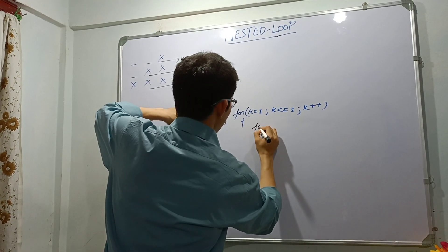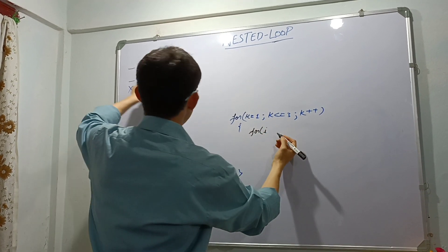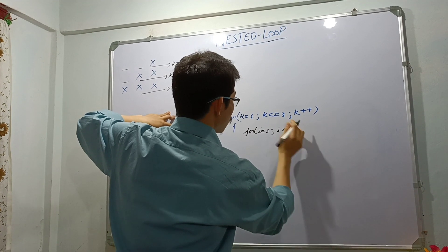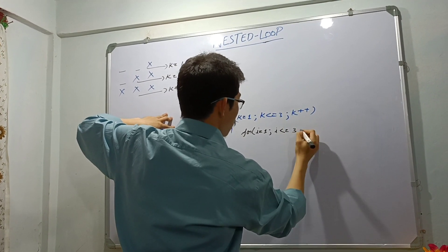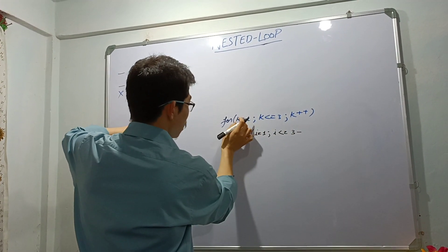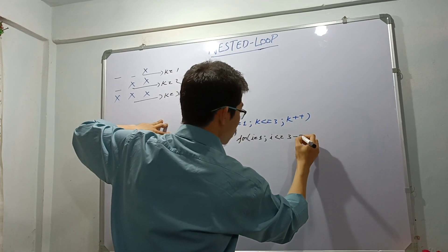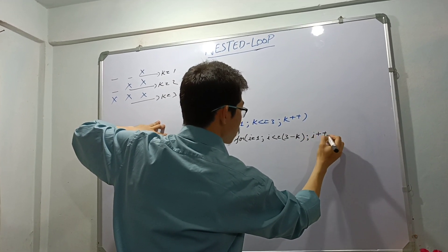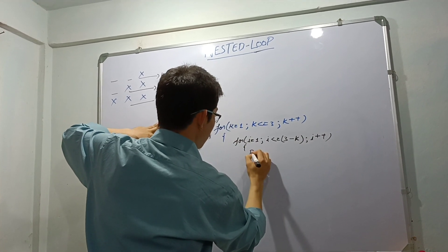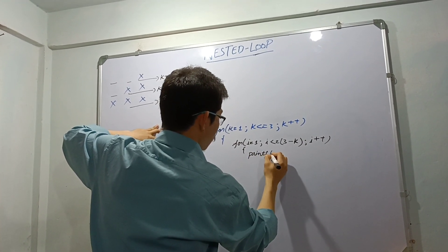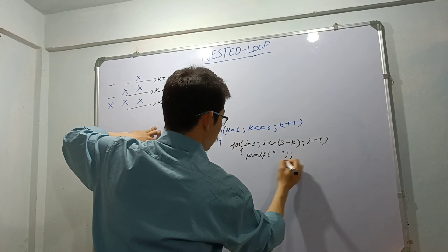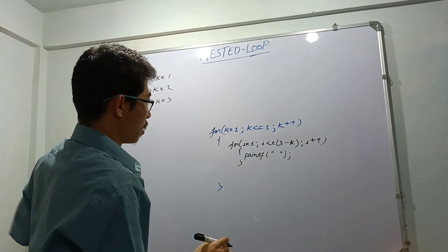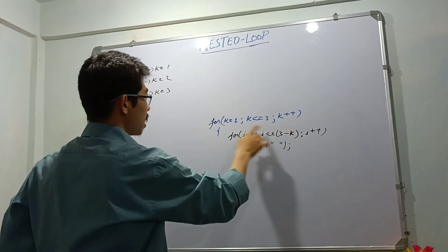For the gaps I'm using i: i equals to 1, i should be less than equals to 3 minus k — write it here, and i plus plus — and printf space. Now see this: when k value will be 1, 3 minus 1 is 2.